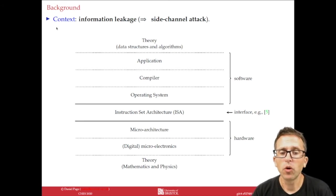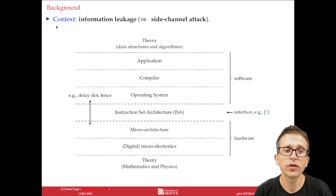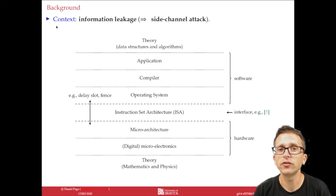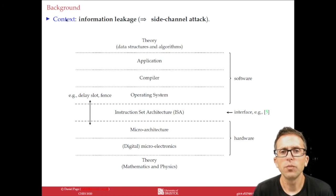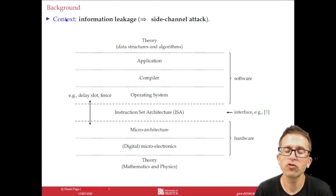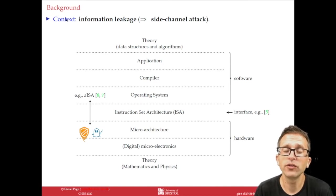Although this is a compelling argument, when you look at concrete instances you can find examples where the ISA is less opaque than you might first imagine. For example, concepts such as branch or memory access delay slots or fences already mean there's some exposure of the underlying microarchitectural implementation to the software. Once you go down this route, you might wonder whether making the ISA less opaque and more transparent could also make sense. In some situations it does — one example would be defending against microarchitectural side-channel attacks. These sorts of attacks are now around 20 years old; in modern terms, think about examples such as Meltdown and Spectre.